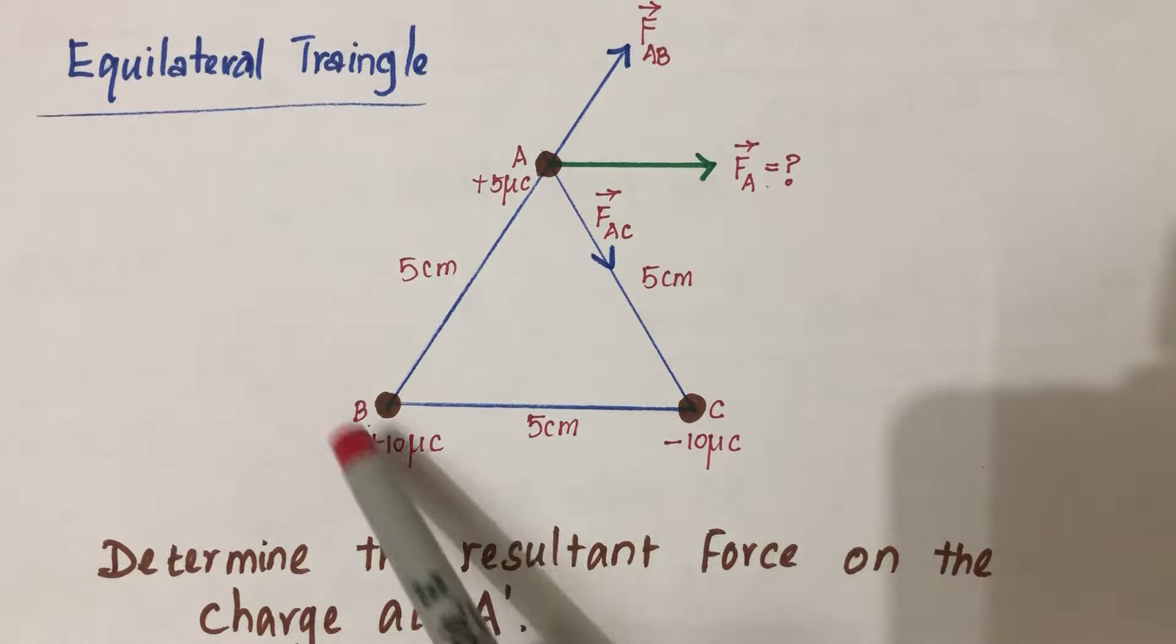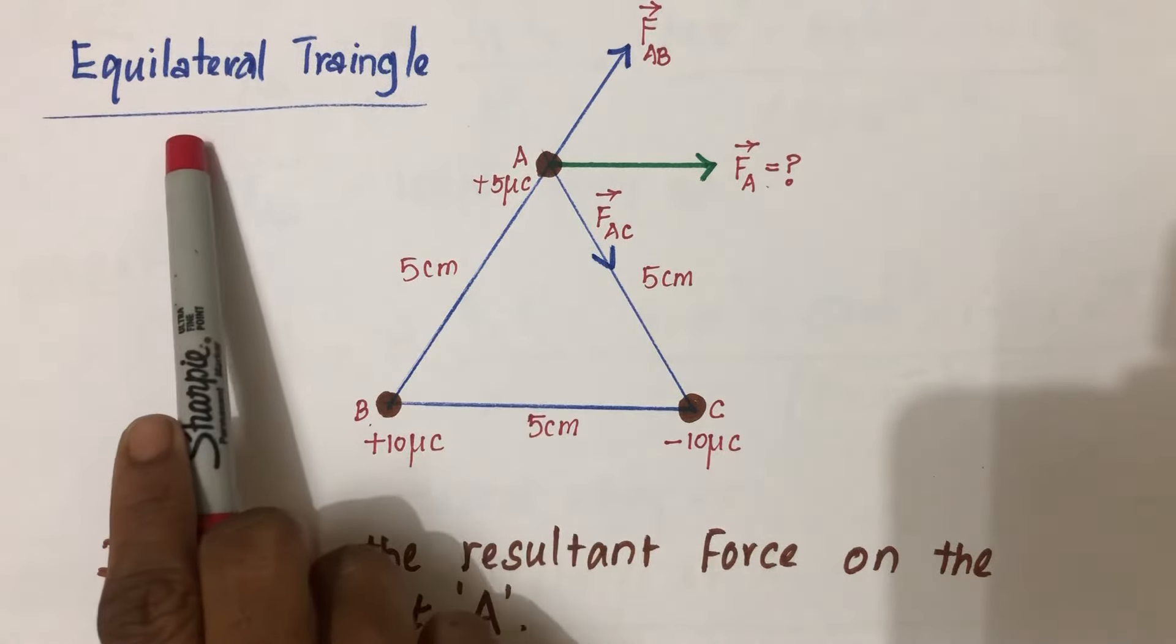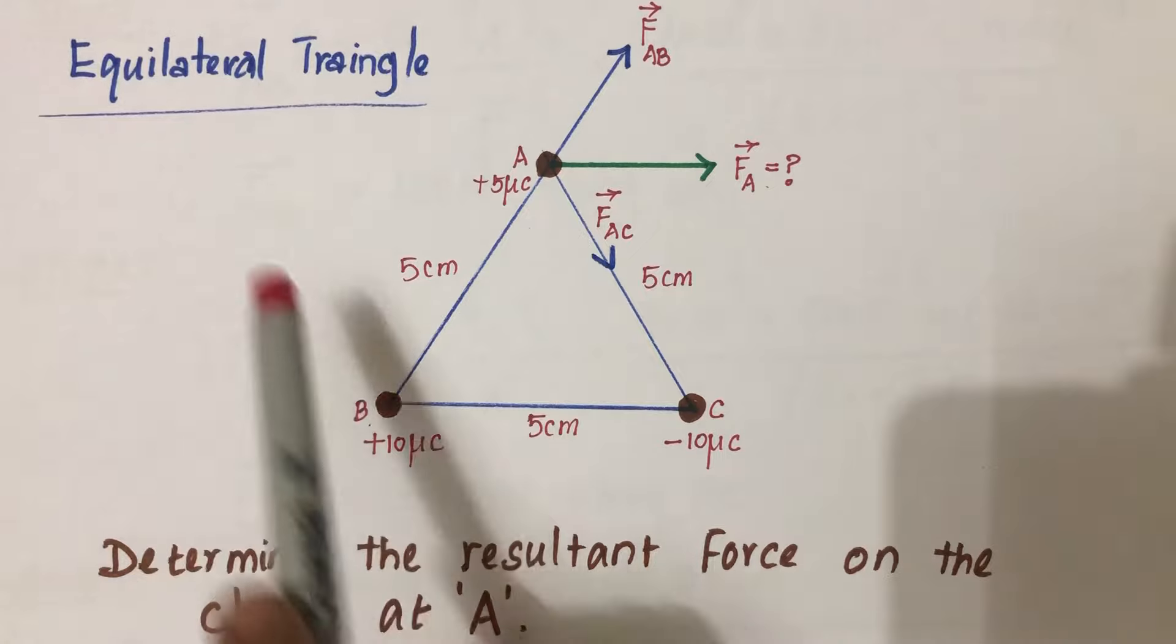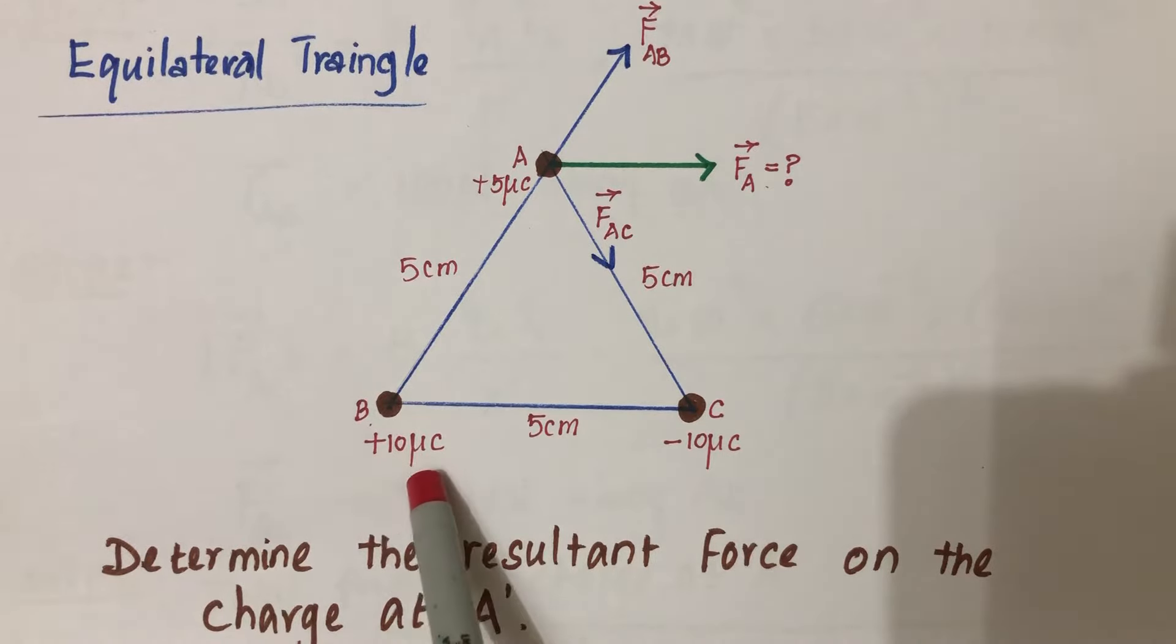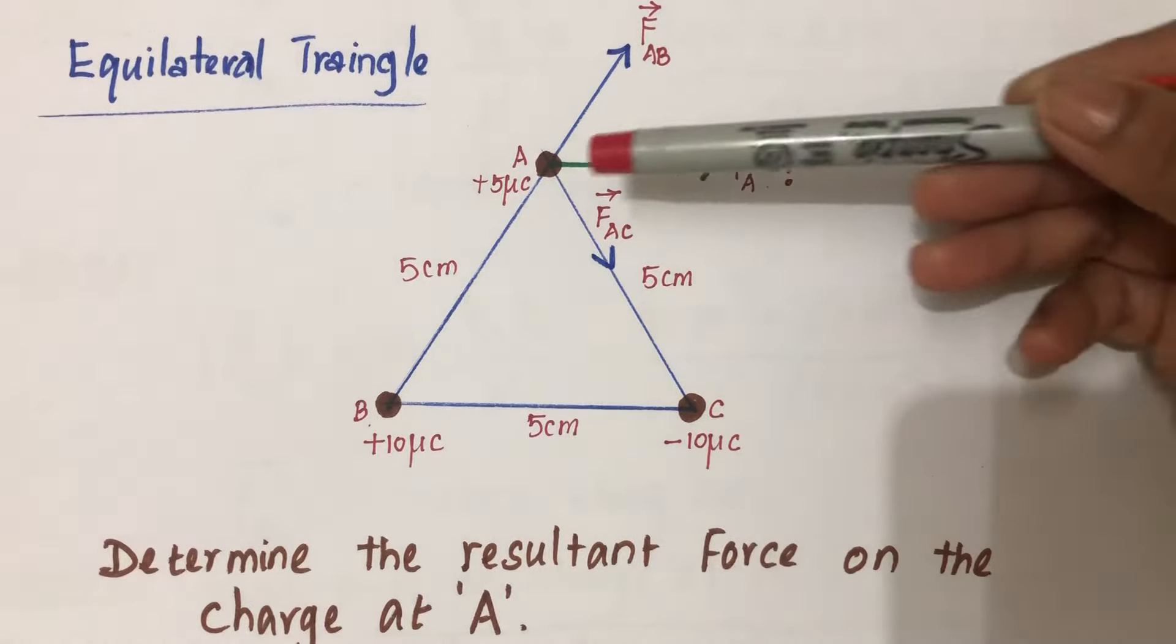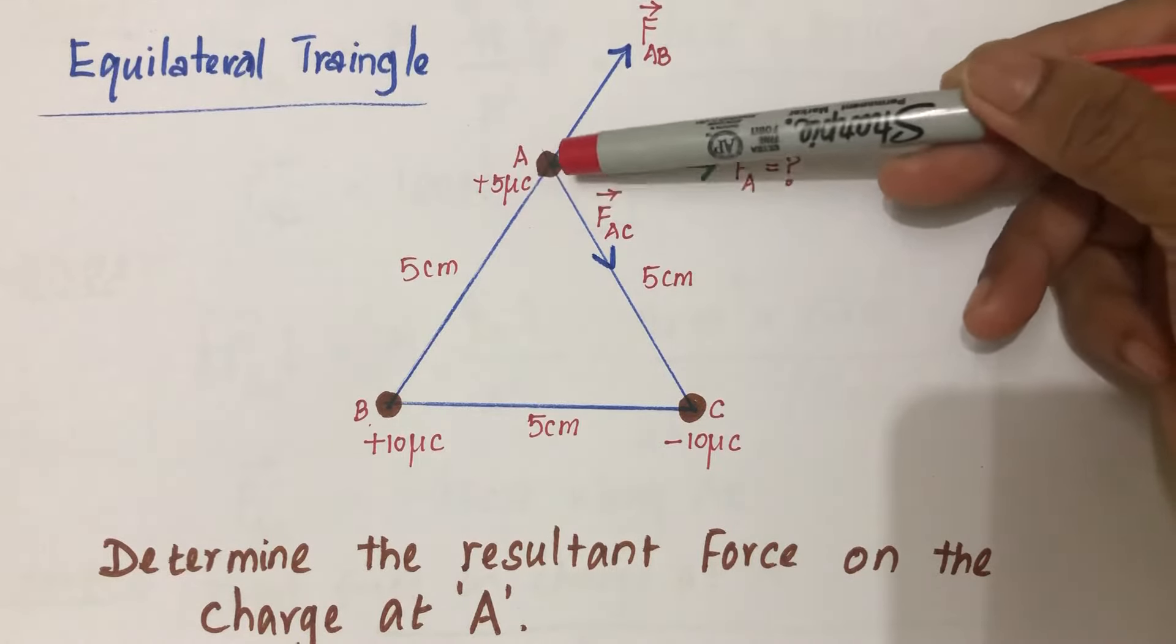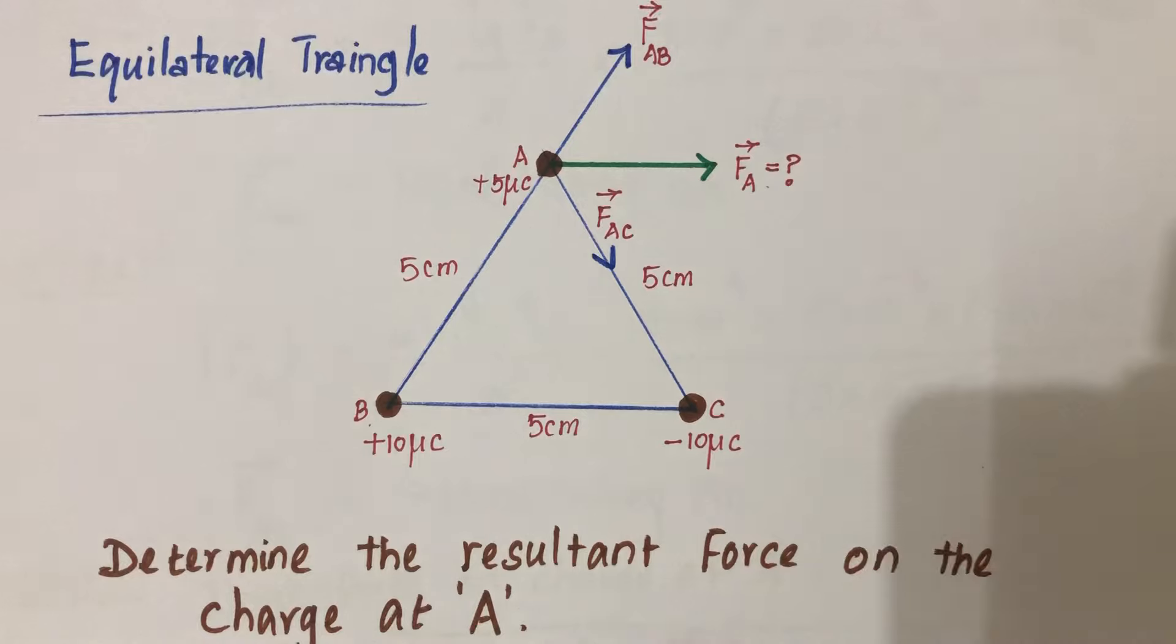In this system of charges, there are three charges kept at the corners of an equilateral triangle: plus 10 microcoulombs (micro is 10^-6 coulombs), negative 10 microcoulombs, and 5 microcoulombs at A. The question is: determine the resultant force on the charge at A.